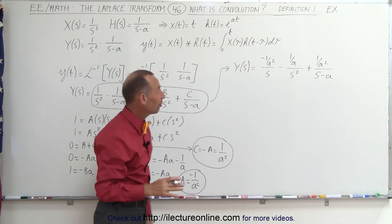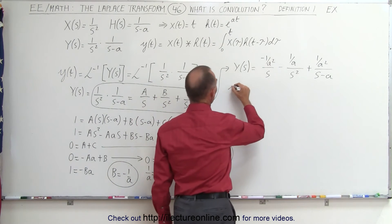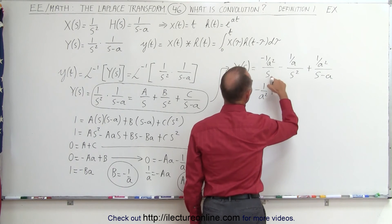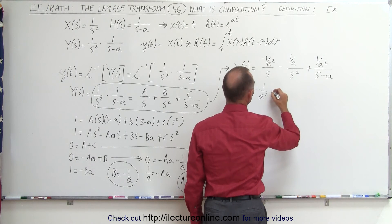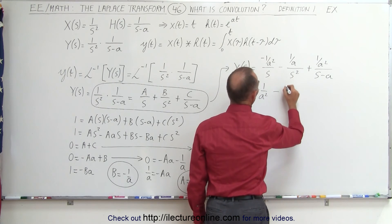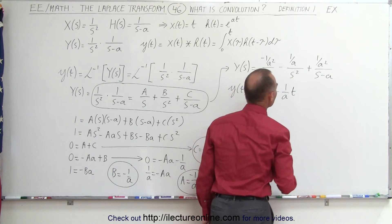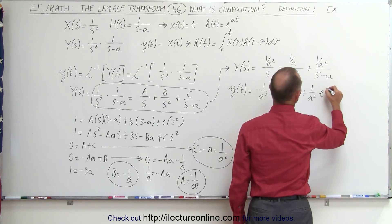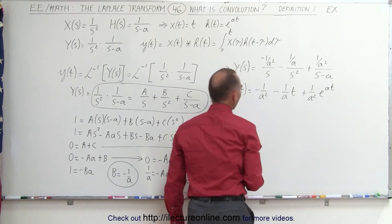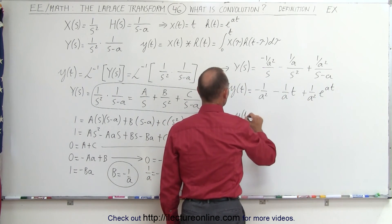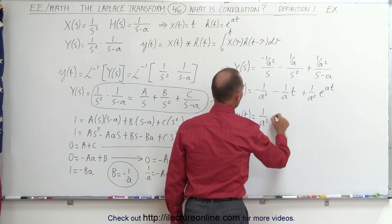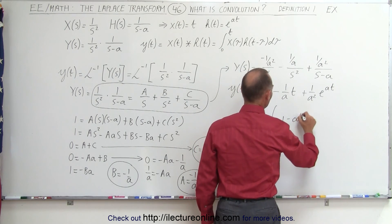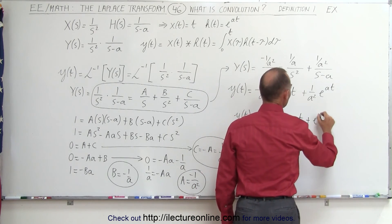Now we take the inverse Laplace transform of both sides. Y(t) equals minus 1/a² times the inverse transform of 1/s, which is simply 1 (the unit step), minus 1/a times t, plus 1/a² times e^(a·t). Factoring out 1/a², we can write y(t) equals (1/a²) times (minus 1 minus a·t plus e^(a·t)).